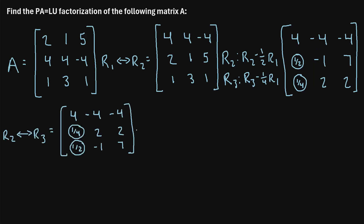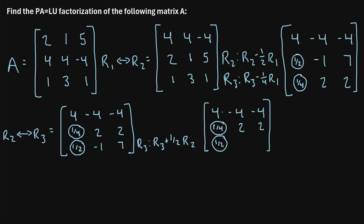After swapping rows two and three, the last step is to get the value below the pivot to be zero. We take row three and do row three plus one half of row two: negative one plus half of two is negative one plus one, which gives zero. The other entry becomes seven plus half of two, which is seven plus one, giving us eight.